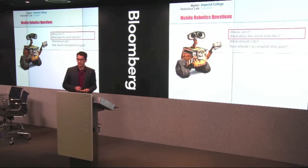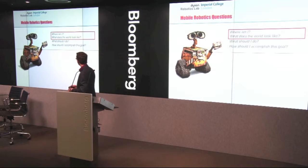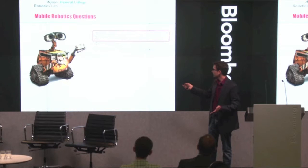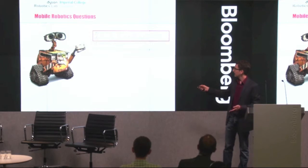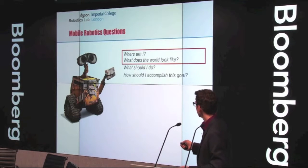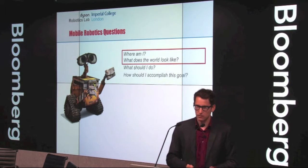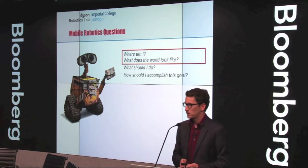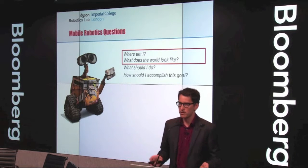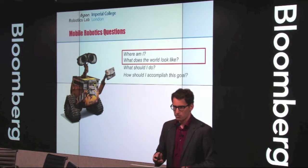Let me start with questions that a mobile robot will have to ask itself — some of these are quite philosophical. It will have to ask: where am I and what does the world look like? It is only after finding answers to these first questions that you can start doing anything more sophisticated, more AI-type things like what should I actually do and how should I do that to accomplish something? I think these first two questions are very important and sometimes maybe a bit ignored these days.